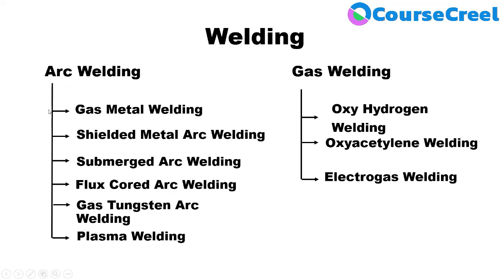Arc welding is classified into gas metal arc welding, shielded metal arc welding, submerged arc welding, flux-cored arc welding, gas tungsten arc welding, and plasma welding — all defined on the basis of heat source. Gas welding, where gas is the main source of heat, is classified as oxy-hydrogen welding, oxyacetylene welding, and electrogas welding. Most manufacturers use arc welding and gas welding for welding operations.